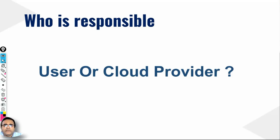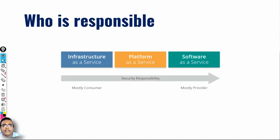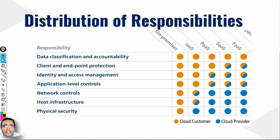So in IaaS the client or user has more control, and in SaaS the client has very less control. The question now is: who is responsible for what? If someone gets hacked, who is responsible? It depends completely on what service is being provided. In IaaS it is mostly the consumer, and in SaaS it is mostly the provider — AWS or Azure — who is responsible.